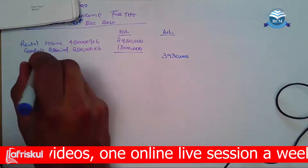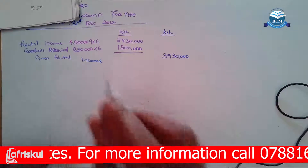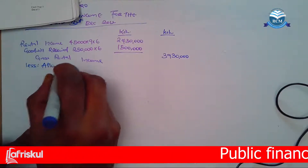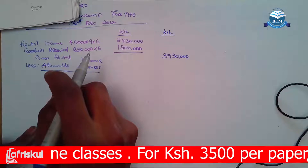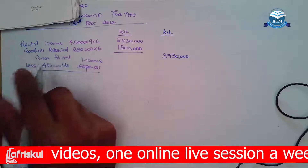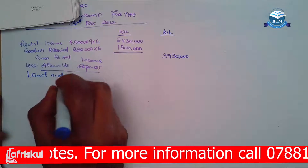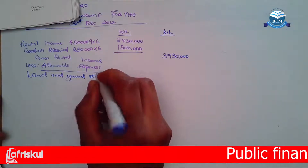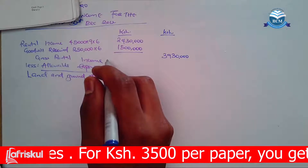This is your gross rental income: 3,930,000. After that, you are going to less the allowable expenses. The allowable expenses — the examiner has told you the following expenses were incurred in the year 2012 in connection with the houses. Starting with land and ground rates, which amounted to 1.2 million per annum. But you can see we acquired the house in April, so you have to apportion.